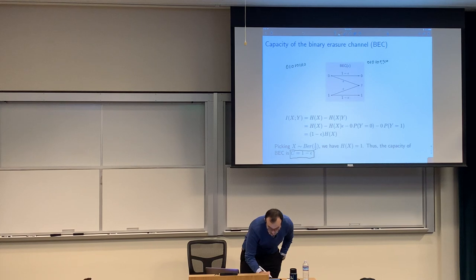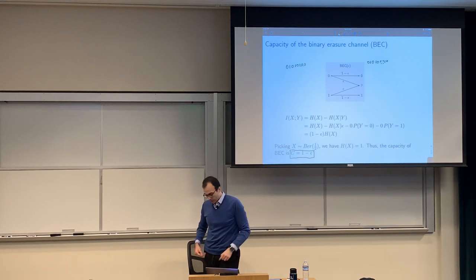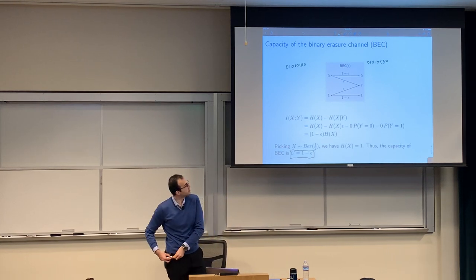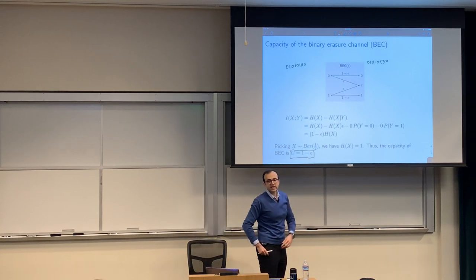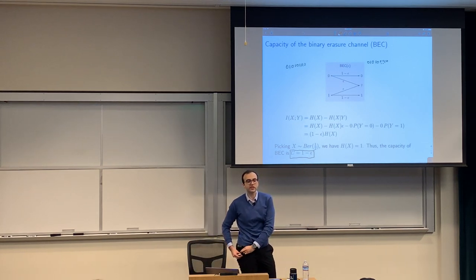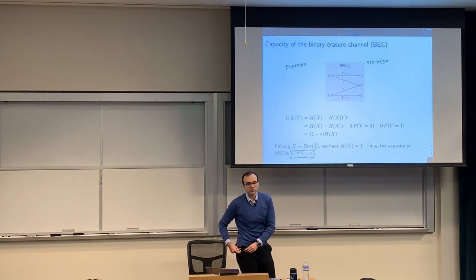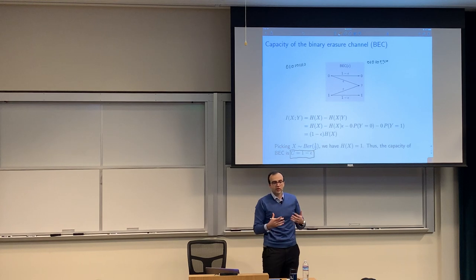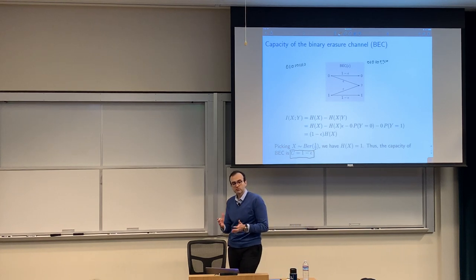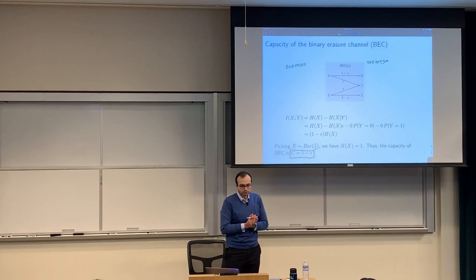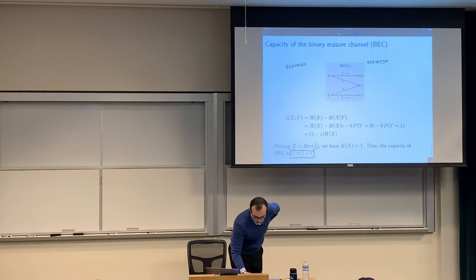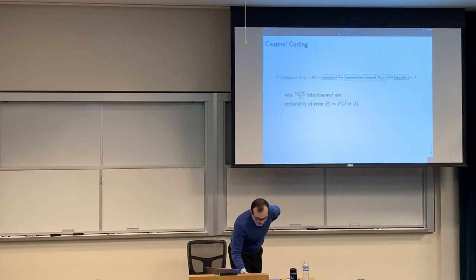This will be extremely important in polar codes. Capacity decreases as the erasure probability increases. For erasure probability of 1/2, capacity is 1/2. The theorem tells you that the maximum rate under which you can reliably communicate is 1 − ε. Let's put this in a formal setting.